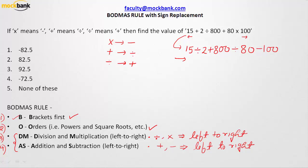The first sign is division. We have division and then addition. There are two divisions here — the first one and the second one. Going left to right, the first division gets priority and should be solved first. So 15 ÷ 2 = 7.5. The expression becomes: 7.5 + 800 ÷ 80 − 100.